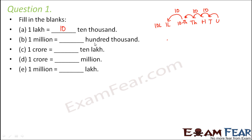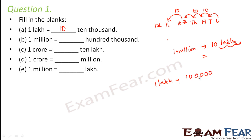1 million is equal to dash hundred thousands. Just now we had learned that 1 million is nothing but 10 lakhs. And what is 10 lakhs? 10 lakhs — 1 lakh is basically 100,000. So 1 lakh is 100,000; that is the Indian system and 100,000 is the international system. So basically 1 million is equal to 10 hundred thousands.